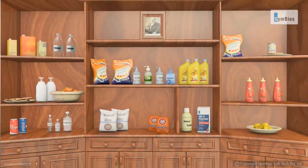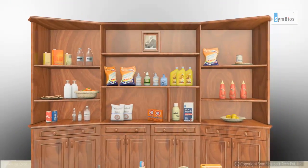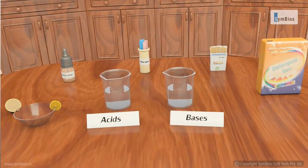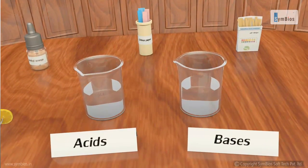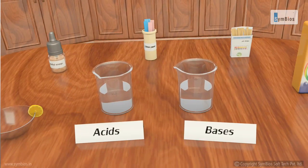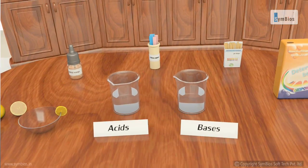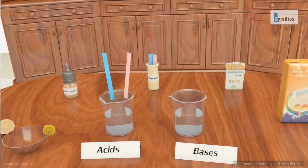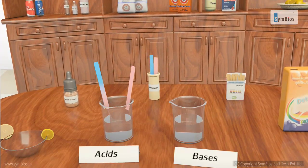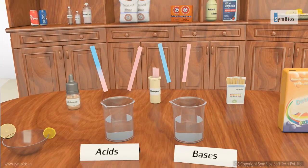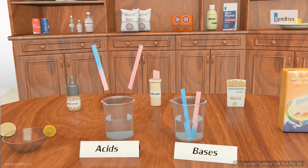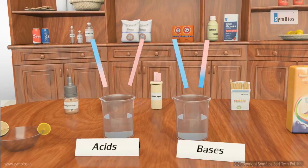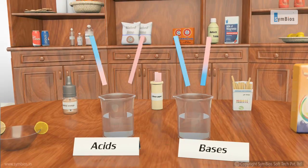We can distinguish between acids and bases with the help of various indicators. Some of them are litmus papers and chemicals like methyl orange. An acidic solution turns blue litmus paper to red, but shows no reaction with red litmus paper — the red litmus paper remains red in acid. A basic solution turns red litmus paper to blue, but shows no reaction with blue litmus paper — the blue litmus paper remains blue in base.